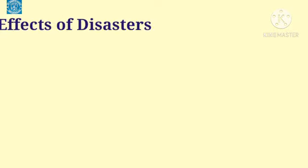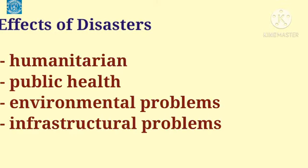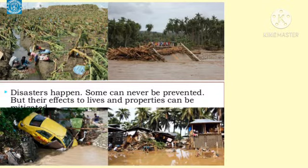Now we will discuss the effects of disasters, with subtopics including humanitarian, public health, environmental problems, and infrastructural damage. Under the humanitarian effect, when a disaster takes place, people are dislocated from their homes — whether from a sudden disaster like an earthquake or a slow disaster like a drought. In both cases, the area becomes uninhabitable and migration takes place.